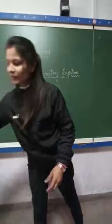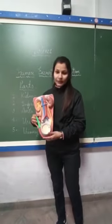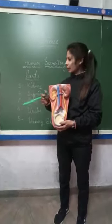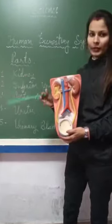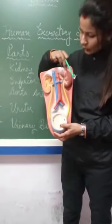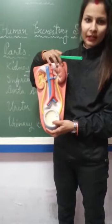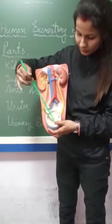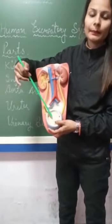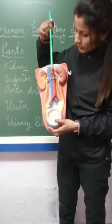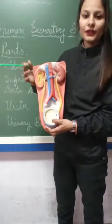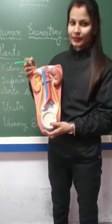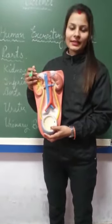So dear children, here comes the model of the human excretory system. We will see the parts which I explained before. These are known as kidneys and they are bean-shaped. This is known as ureter and this one is the urinary bladder. Two tubules are also present here — this is known as inferior vena cava and the other one is aorta artery.